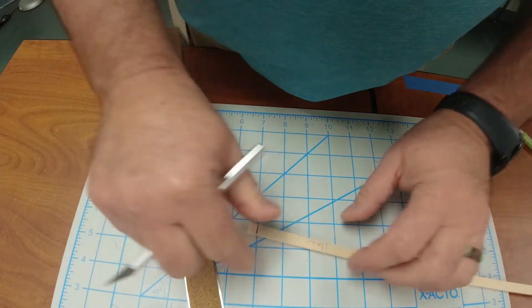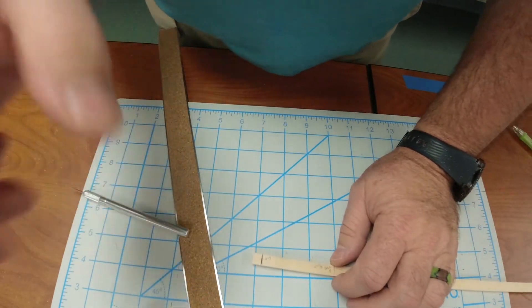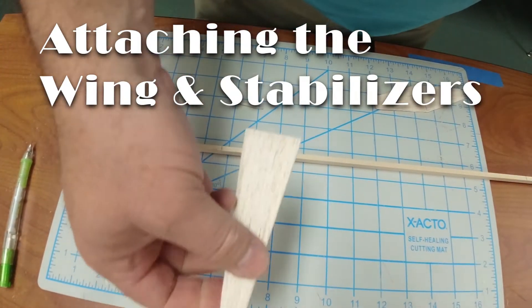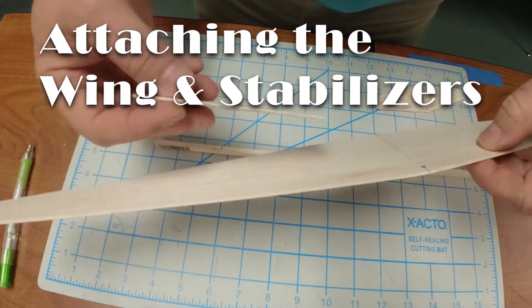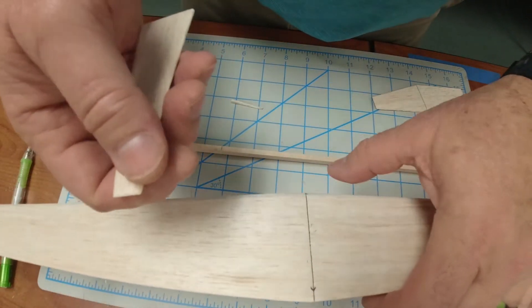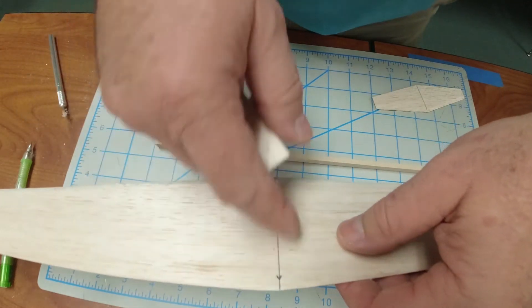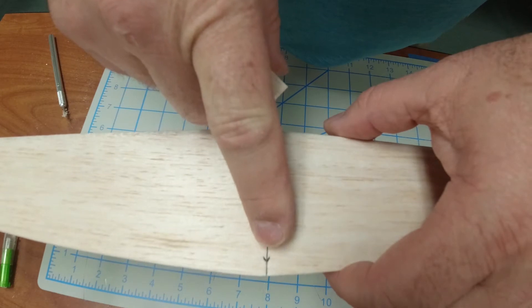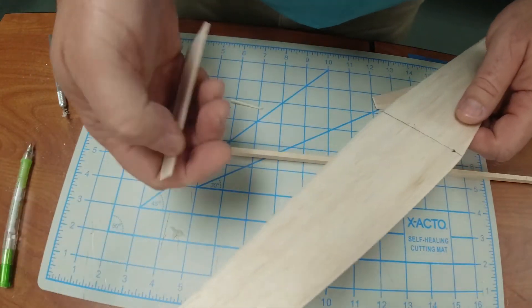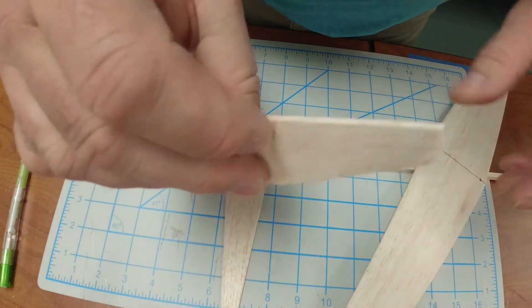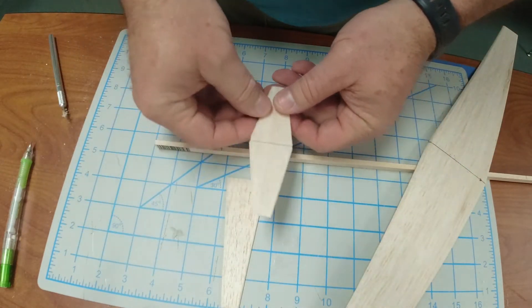Once you have all your wings and your stabilizer sanded with their leading and trailing edges tapered off so they look more like an airfoil, I would suggest kind of keeping track. I drew a little arrow to tell me which was the leading edge, and I also drew a line down the middle.